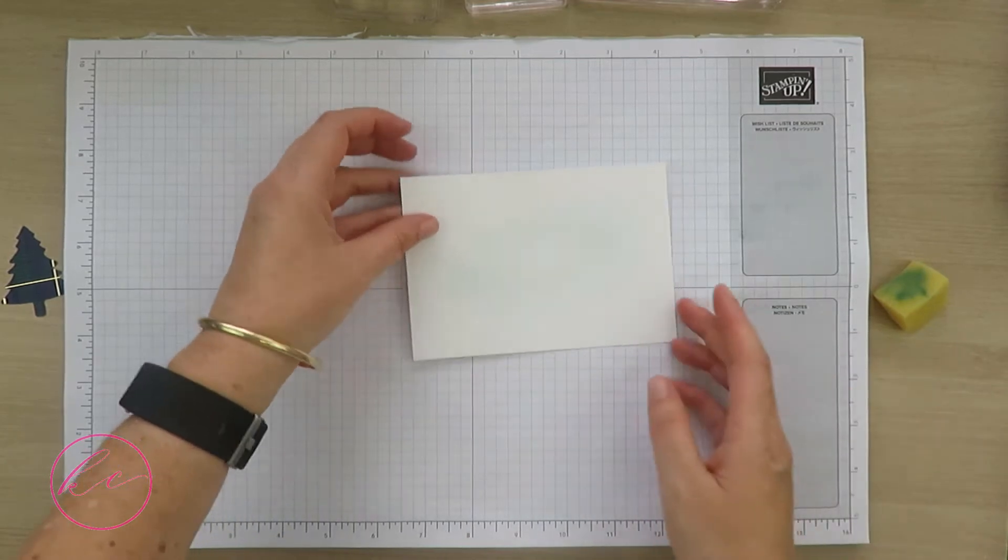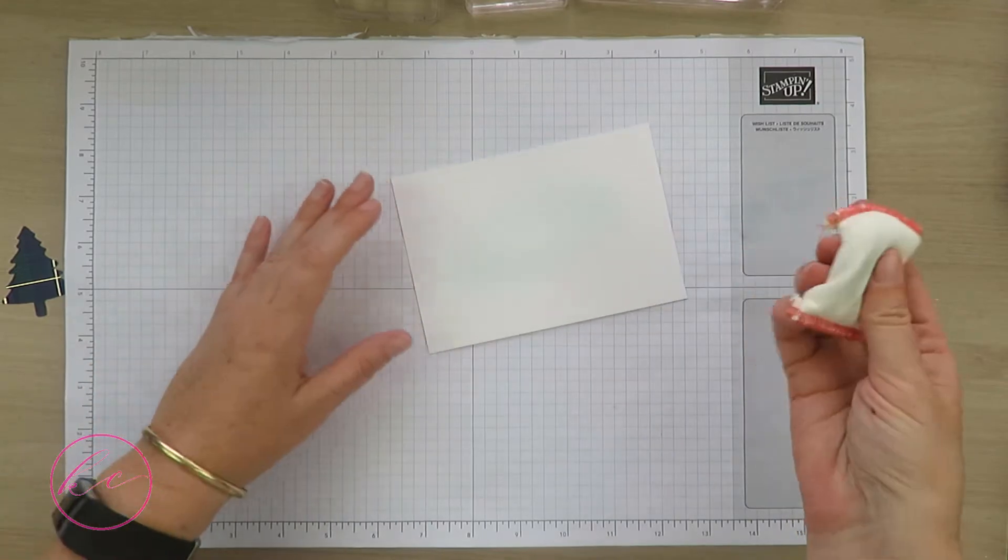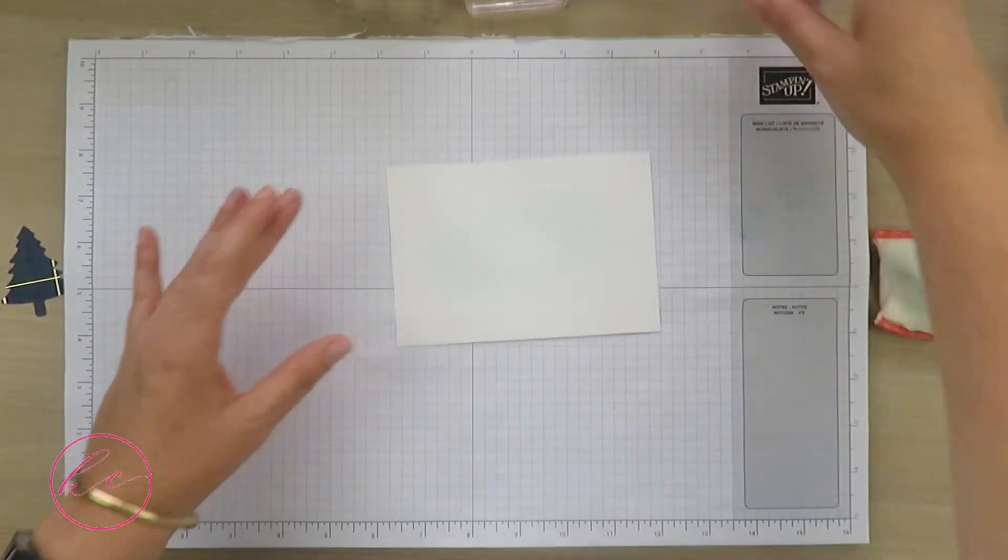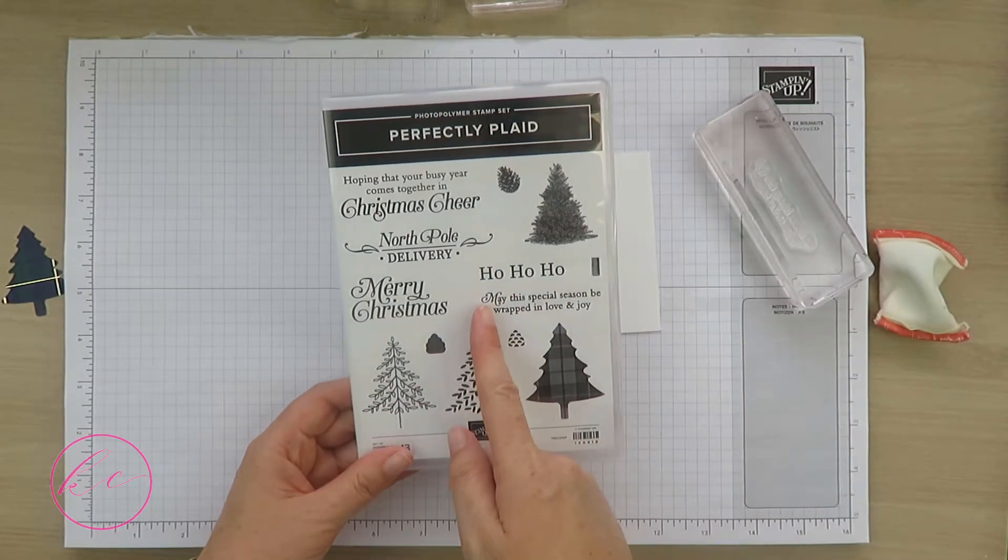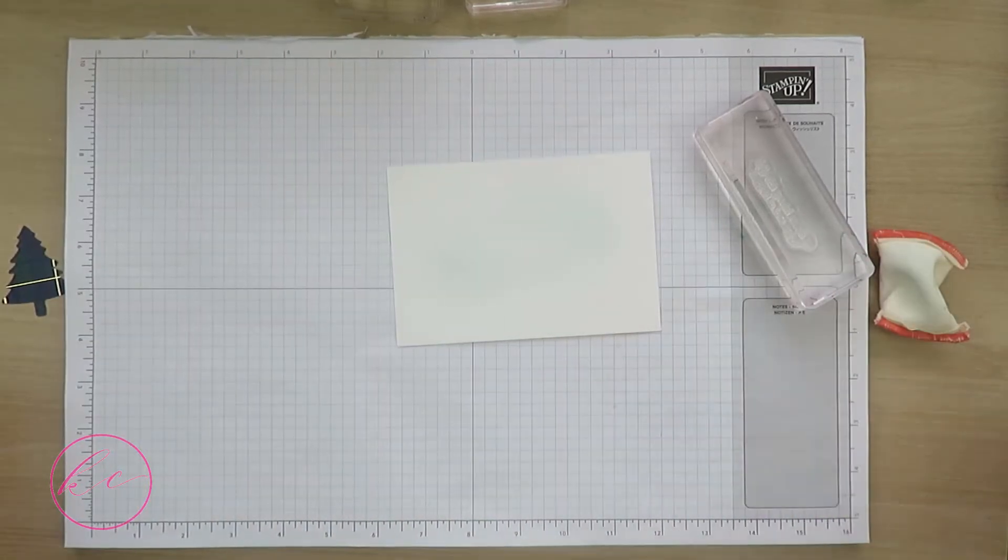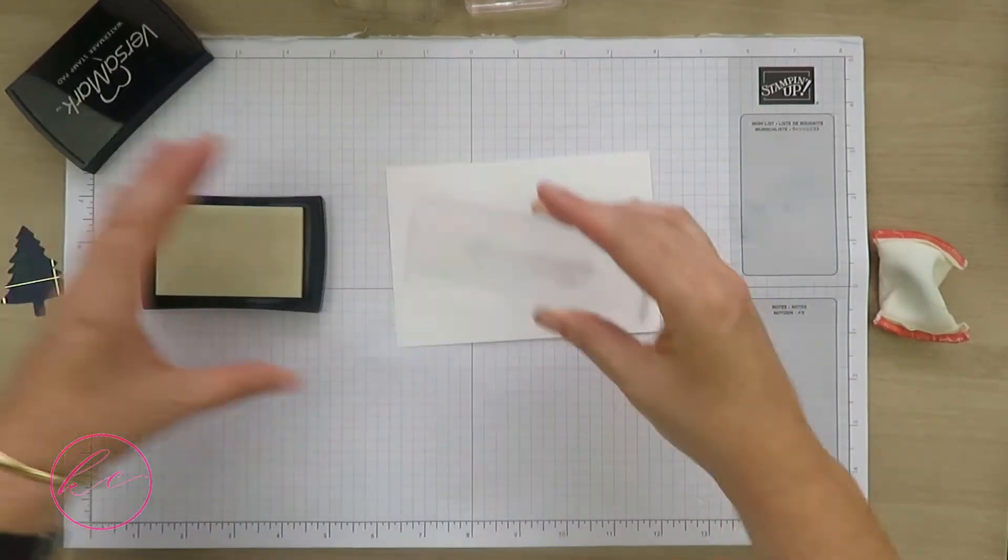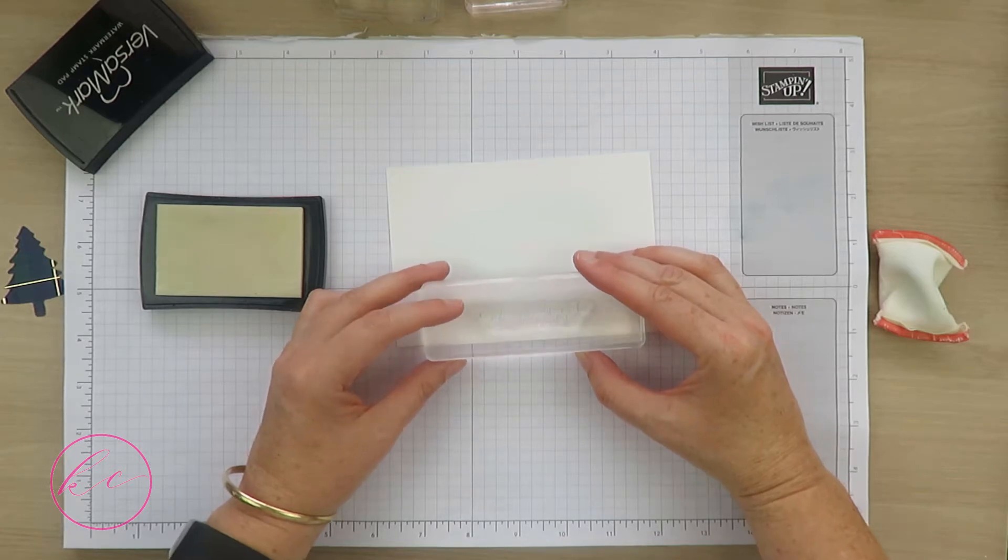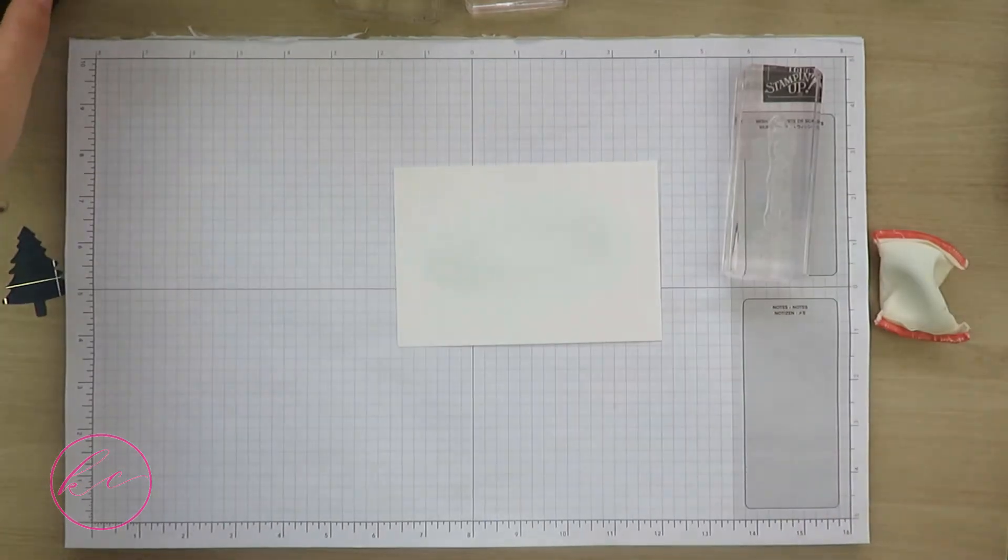Before we set that aside, let's stamp our greeting. I'm going to emboss our greeting towards the bottom. My greeting is coming from the Perfect Plaid stamp set: 'May your special season be wrapped in love and joy.' I'm going to ink this up in VersaMark ink, place it down the bottom, then sprinkle on some gold embossing powder and heat set that.